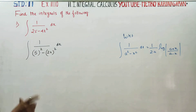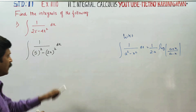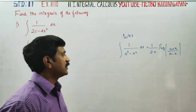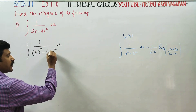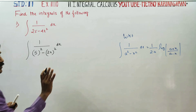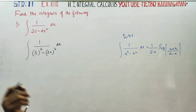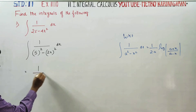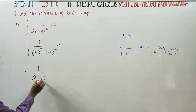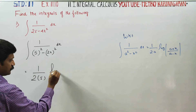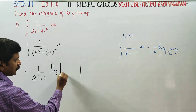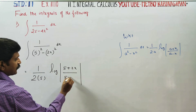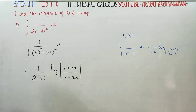We know that formula is used. So the question is, we use the formula. The result is 1 by 2a, logarithm of a plus x, over 5 minus 2x, 5 plus 2x. Plus C.